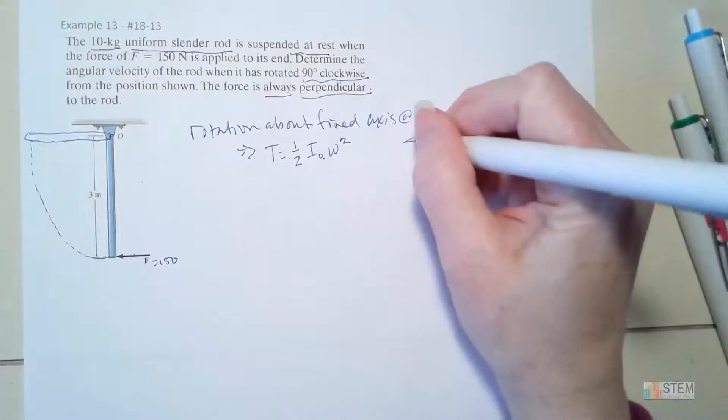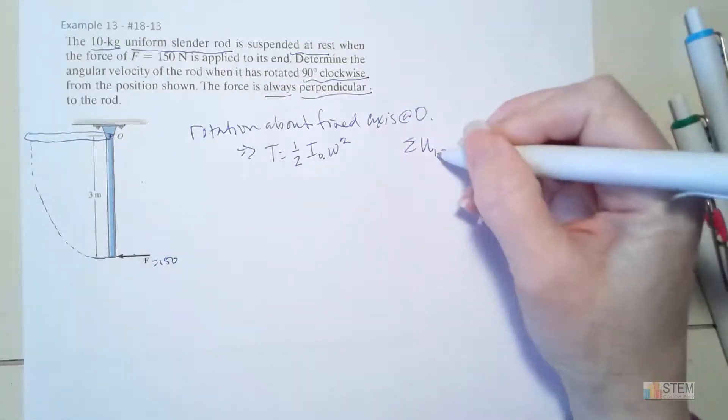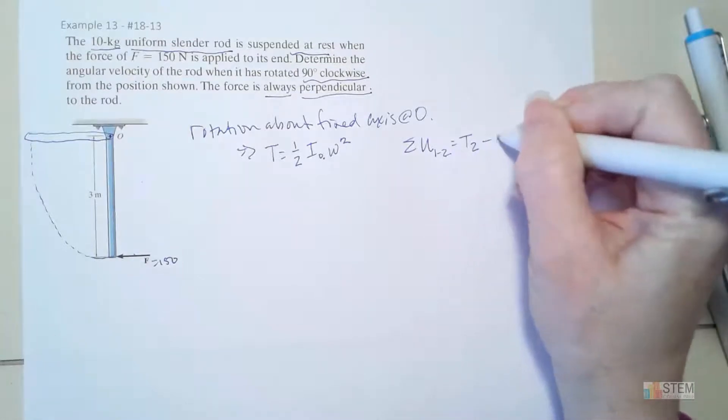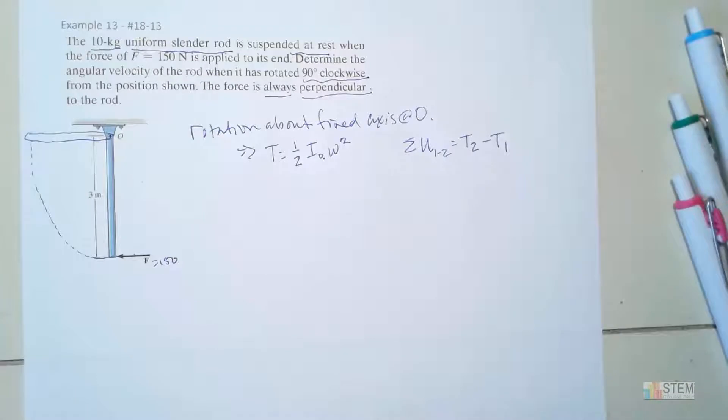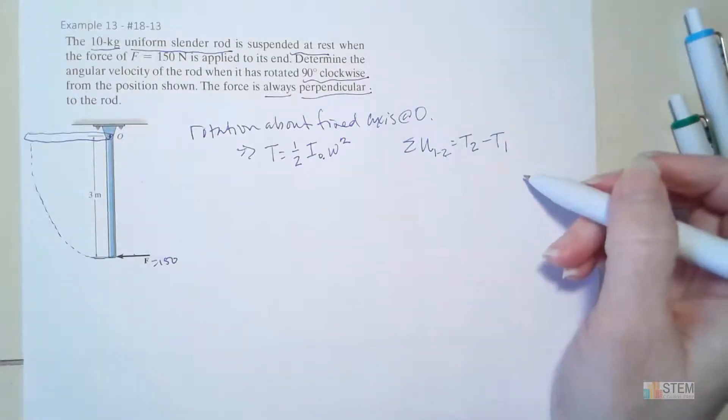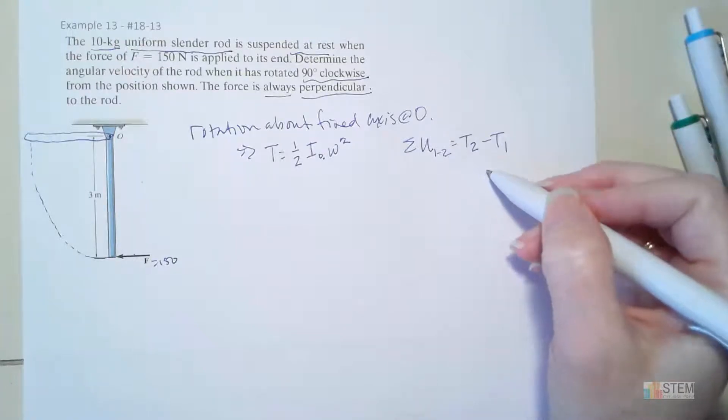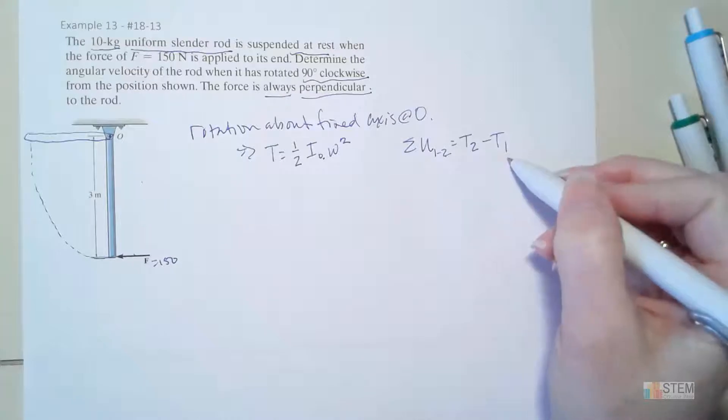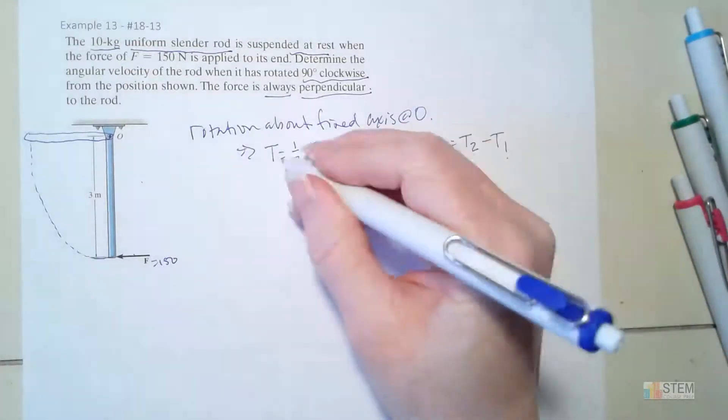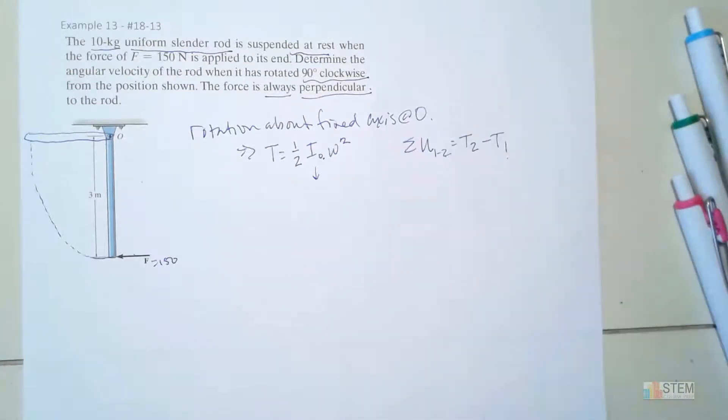Now we also know that the sum of the work terms going from time one to time two has to equal T2 minus T1. So we're going to use these two equations to solve our problem. First thing I want to do is get an equation for T that we can use to find T2 and T1. So this is our T equation, but I need to know what I_O is. So we need to find that.